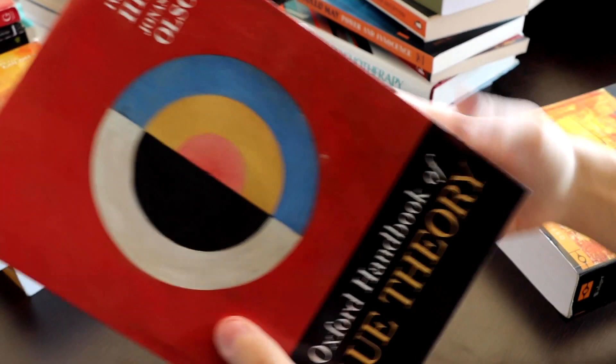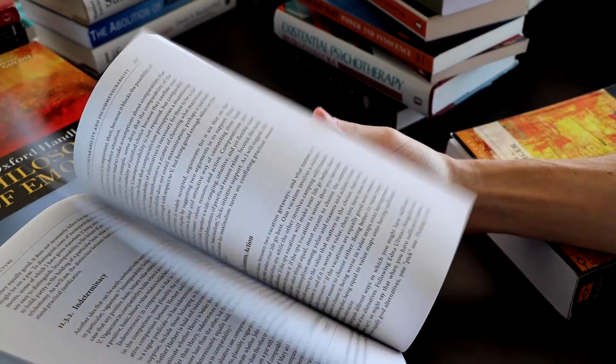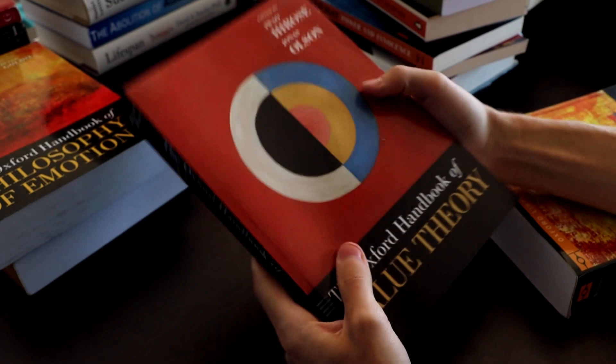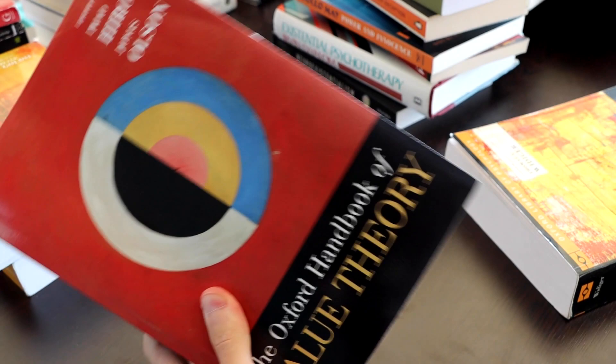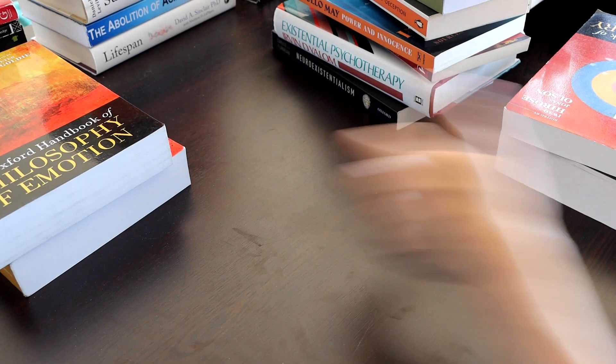Oxford Handbook of Value Theory. Obviously writing about values would be important to understand the human existence, so I want to get books on values. And this is one of the books I go to. Anytime I want to get introduced to a subject, I either look for an introductory textbook or look for an Oxford Handbook. They're really good at being systematic and providing a super good introduction.